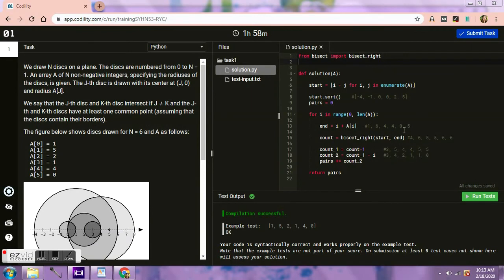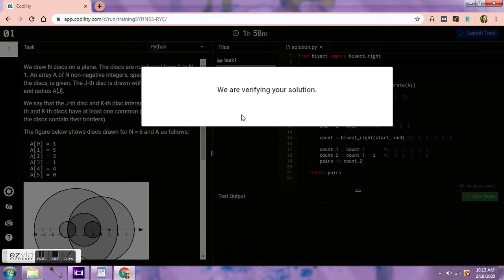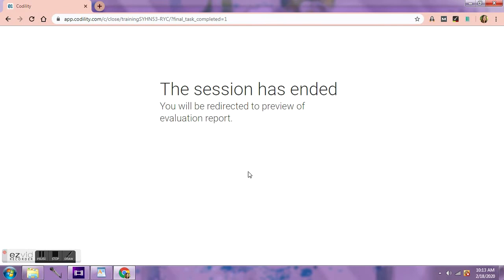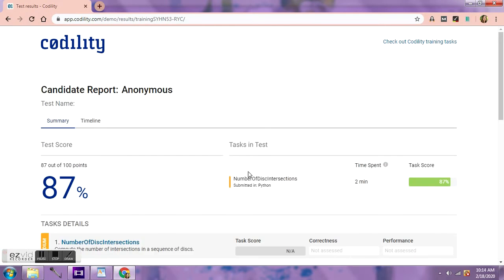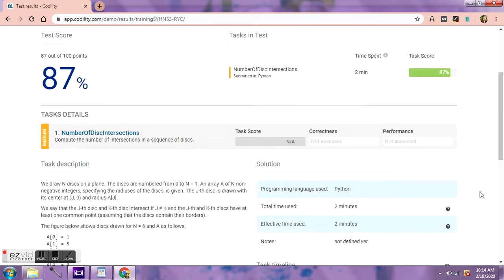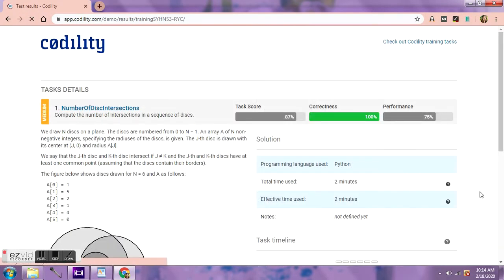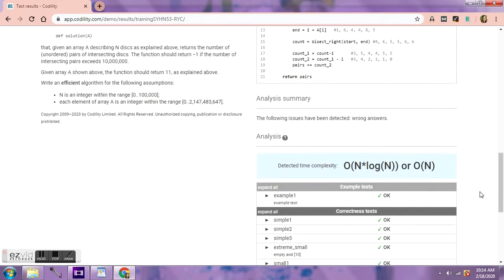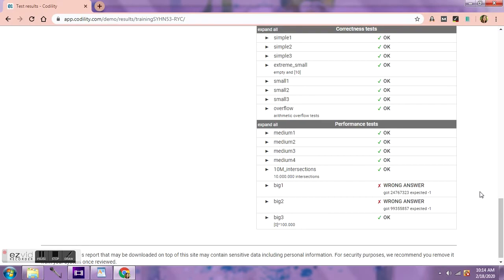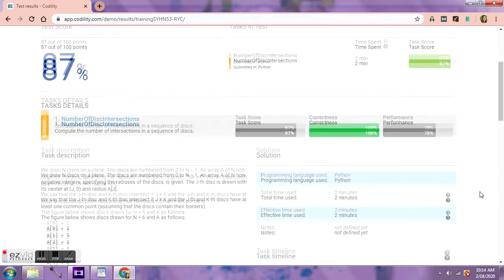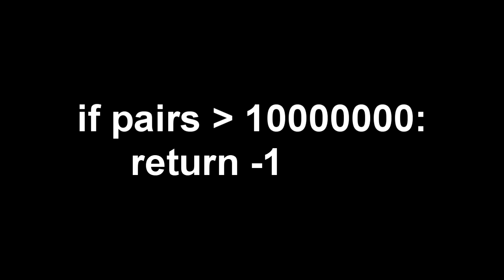I copied and pasted my code. You can see my hashtagged comments. We're getting the right answer. We will submit. Yes. We will continue. And we got an 87%. That's actually really good. I'm actually pleasantly surprised. Let's see what went wrong. Oh, I see exactly what happened. I did not put the if statement. If the pairs are greater than 10 million, return negative one. That's my problem.